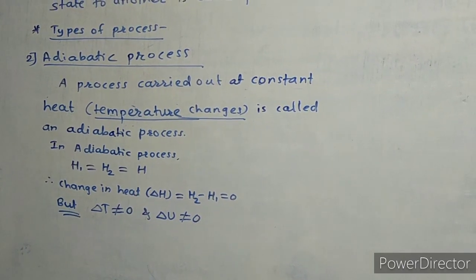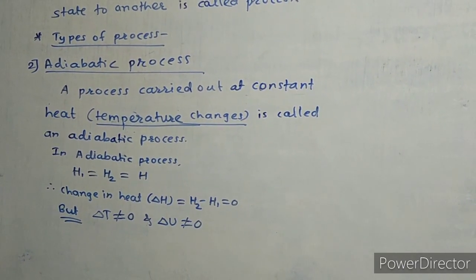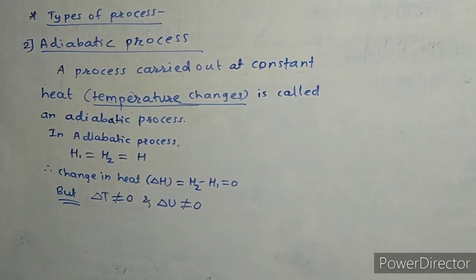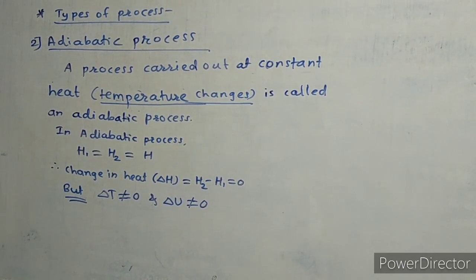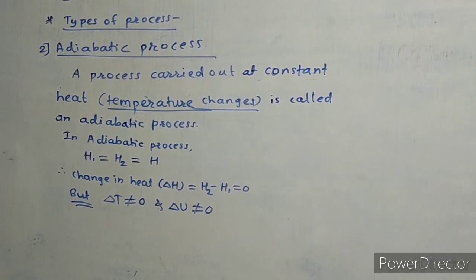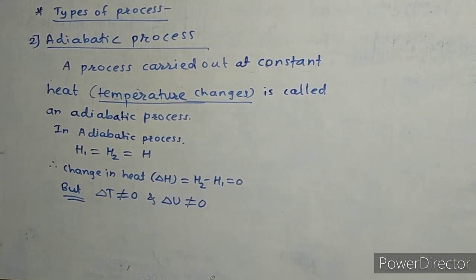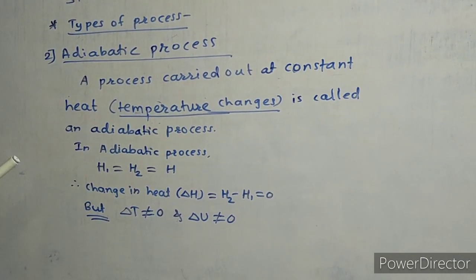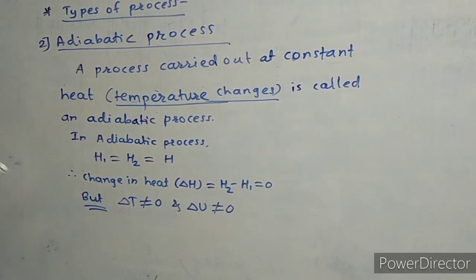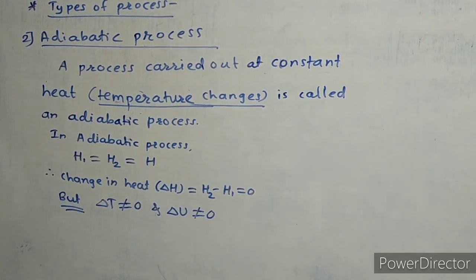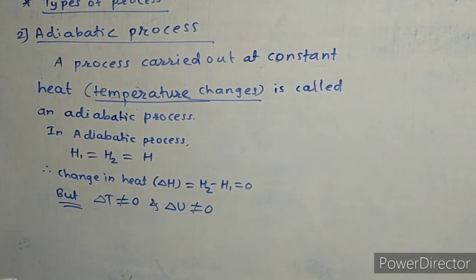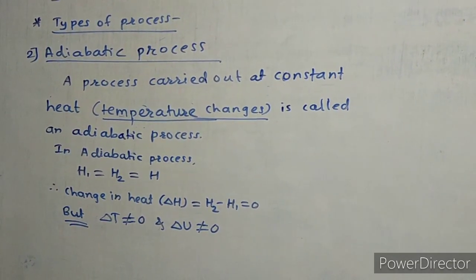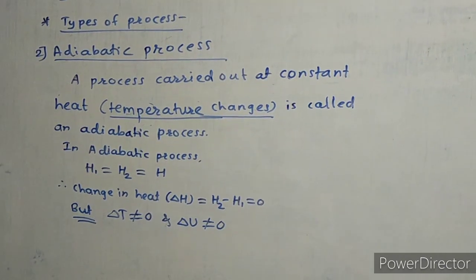The second type is the adiabatic process. This is opposite to the isothermal process. In an adiabatic process, no heat is exchanged with the surroundings, so delta H equals H2 minus H1 equals zero. However, delta T is not equal to zero — the temperature does change. This is why the adiabatic process is opposite to the isothermal process.